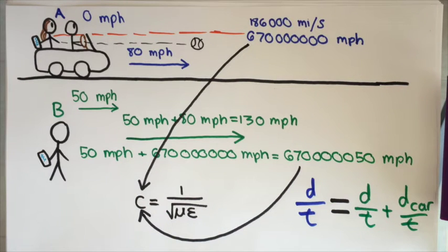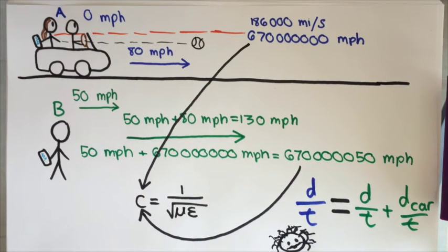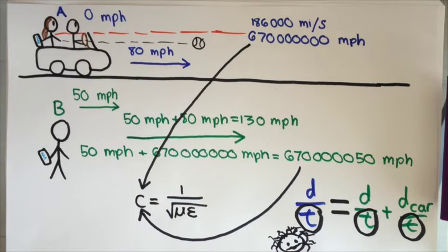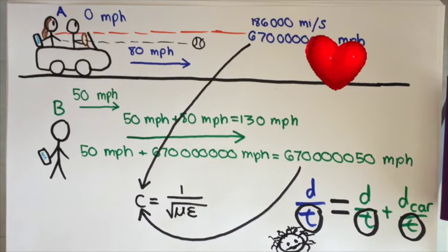But then Einstein came along, and he said maybe, just maybe, for those two sides of the equation to be equal, their times must be different. Actually, Einstein proposed that both time and space stretch or shrink to make sure that no matter how fast we move, the speed of light remains the same. Light is like the pacemaker of the universe. Just as your heart beats faster or slower to keep your oxygen levels the same when you're exercising or resting, so too does light regulate the beat of time to keep C constant. Isn't that just incredible?